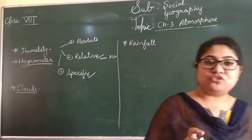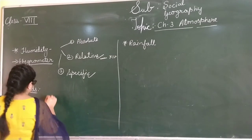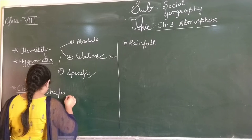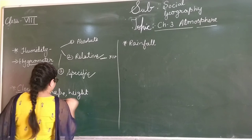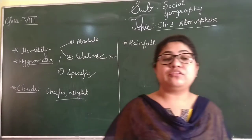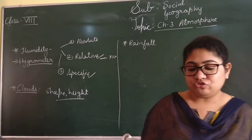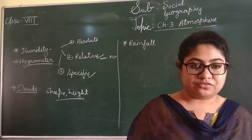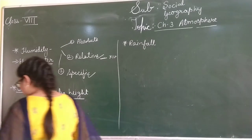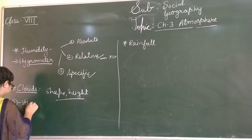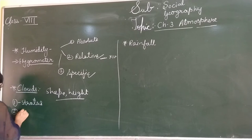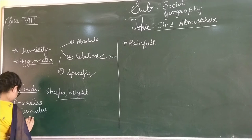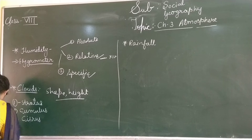Now we talk about types of clouds. Clouds are classified on the basis of their shape and height. The important types of clouds are: Stratus, Cumulus, Cirrus, and Nimbus. So there are four types of clouds.